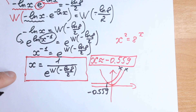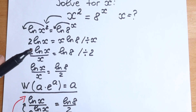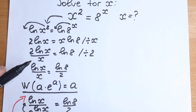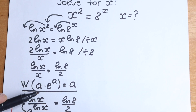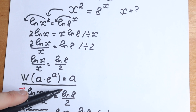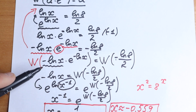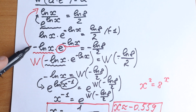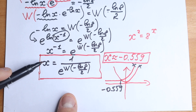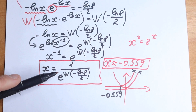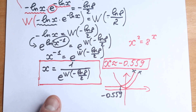Let's recap. We started with x squared equals 8 to the x, took natural log on both sides, then grouped variables on the left and constants on the right. We applied the Lambert W function: if you have a times e to the a, Lambert W gives you a. After all steps, we found minus natural log x equals W of minus natural log 8 over 2, and solving gives x approximately equal to minus 0.559.